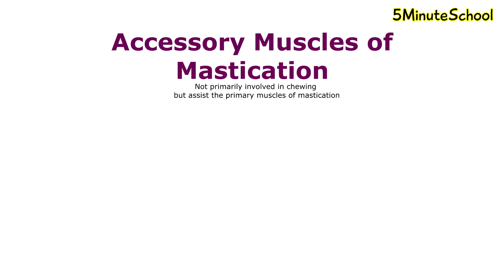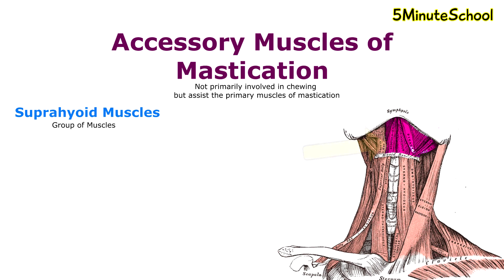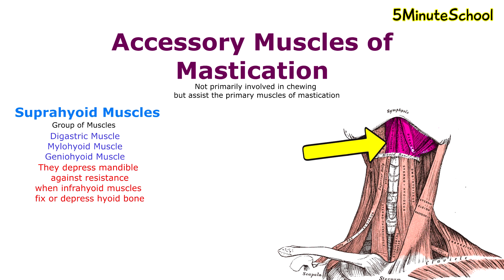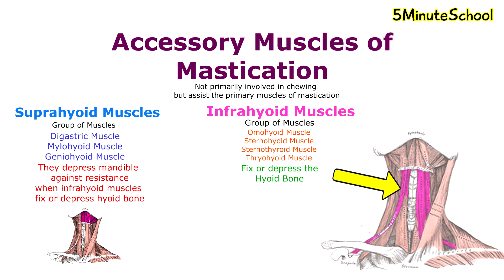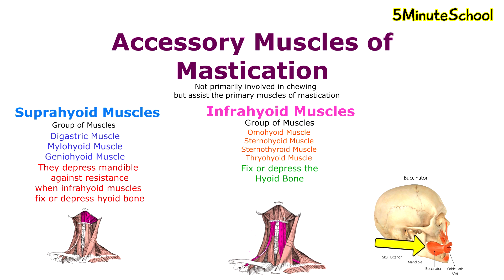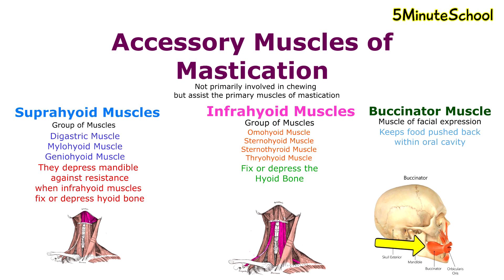There are also accessory muscles of mastication, which are not directly involved in the motion of chewing but assist the primary muscles. The first group is the suprahyoid muscles, made up of the digastric muscle, the mylohyoid muscle, and the geniohyoid muscle. They depress the mandible against resistance when the infrahyoid muscles fix or depress the hyoid bone. The infrahyoid muscles — the omohyoid, sternohyoid, sternothyroid, and thyrohyoid — fix or depress the hyoid bone. The buccinator muscle, primarily a muscle of facial expression, also assists mastication by keeping food pushed back within the oral cavity.